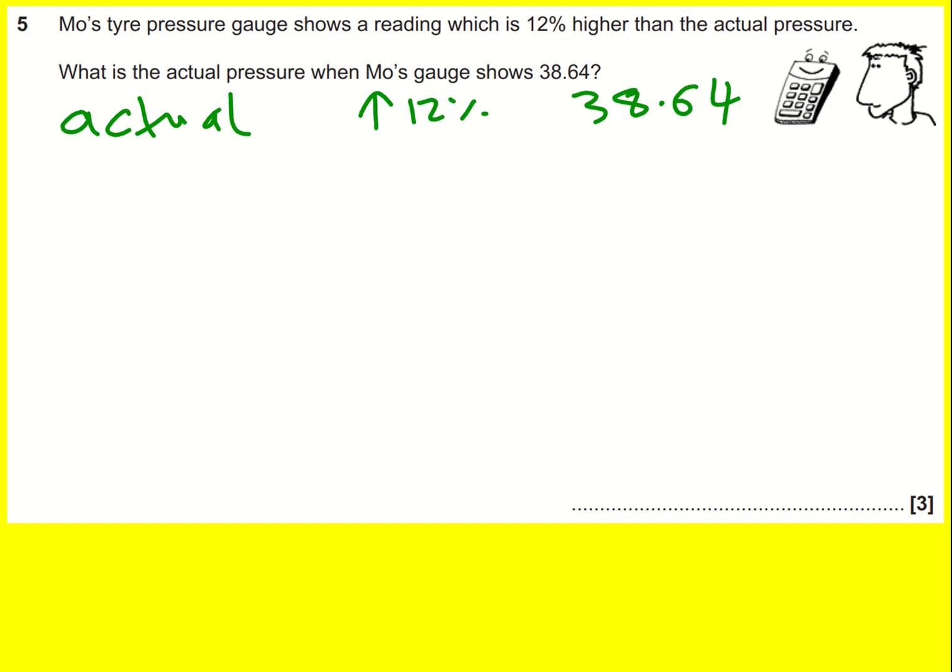So how are we going to deal with this? Well I'm going to talk about two methods. First method, okay so our actual one is 100%. It's gone up by 12% and that means that 38.64 is actually 112% because I've just added these two percentages together.